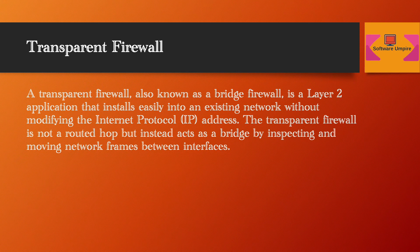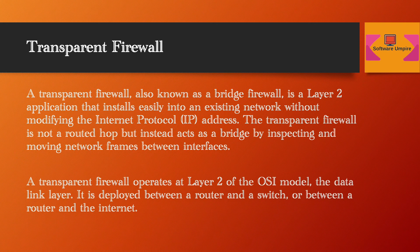A transparent firewall, also known as a bridge firewall, is a Layer 2 application that installs easily into an existing network without modifying the IP address. The transparent firewall is not a routed hop; instead, it acts as a bridge by inspecting and moving network frames between interfaces. It operates at Layer 2 of the OSI model — the data link layer — and is deployed between a router and a switch, or between a router and the internet.